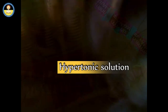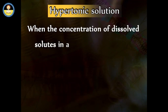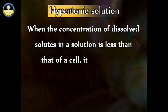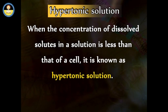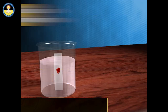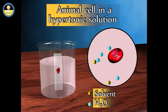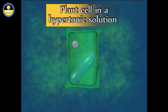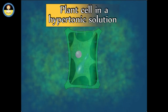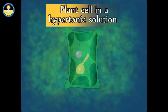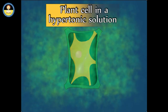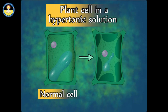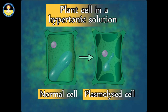When the concentration of dissolved solutes in extracellular solution is greater than that of a cell, it is known as a hypertonic solution. An animal cell, when kept in a hypertonic solution, results in crenation, where the shape of the cell becomes distorted and wrinkled due to the loss of water. When a plant cell is placed in a hypertonic solution, the water inside the cells is drawn out by osmosis, the vacuoles decrease in size, and the cytoplasm shrinks away from the cell wall — this state is known as a plasmolyzed cell, causing wilting in the plant.